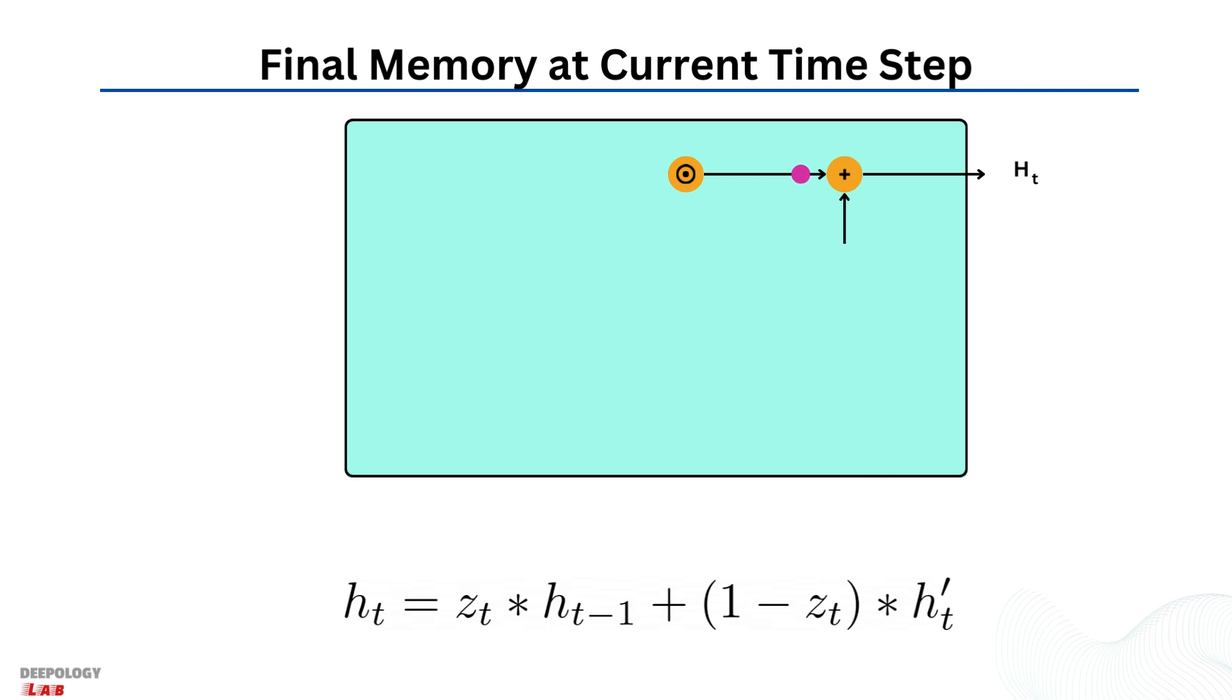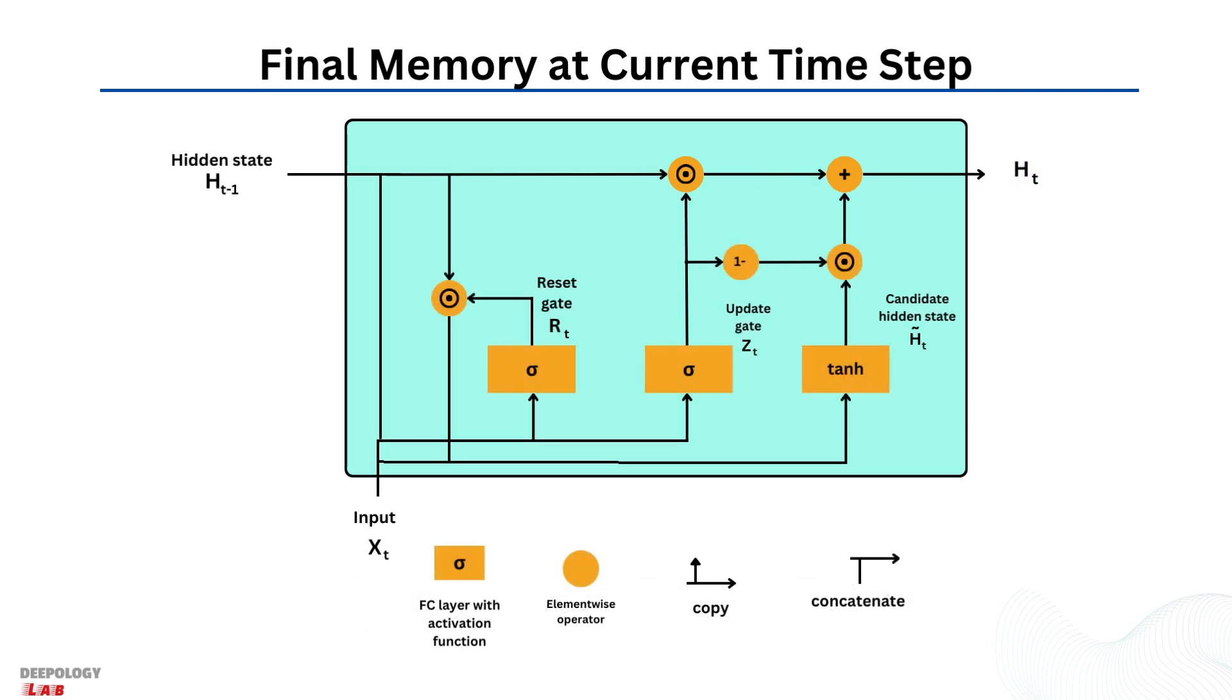First, apply element-wise multiplication to the update gate and previous hidden layer. Second, apply element-wise multiplication to one minus update gate and current memory function. Third, sum the results from step 1 and 2.